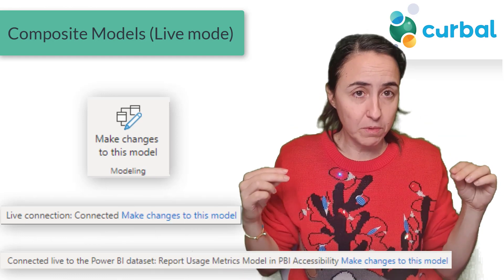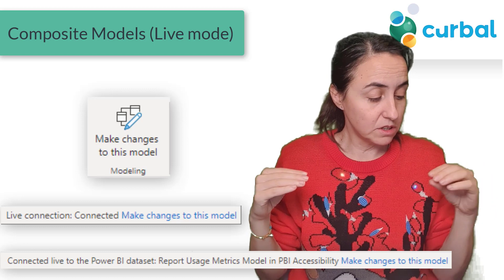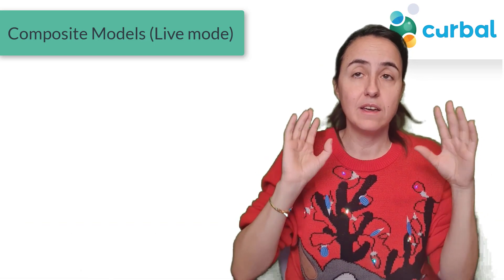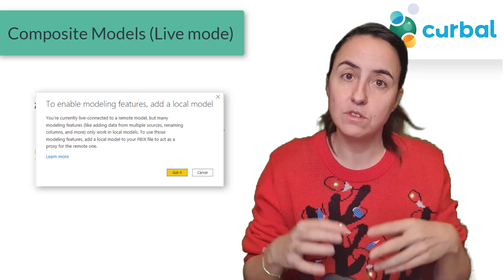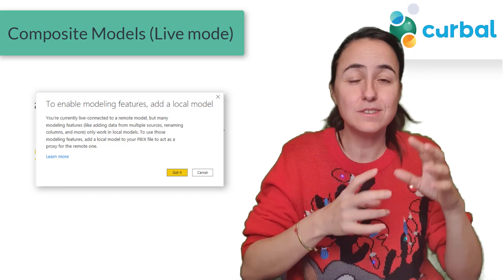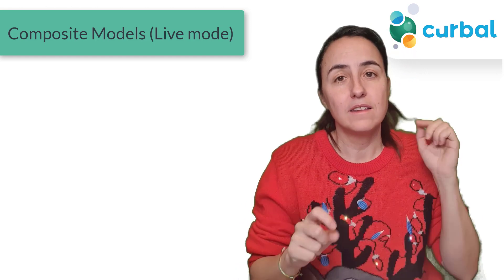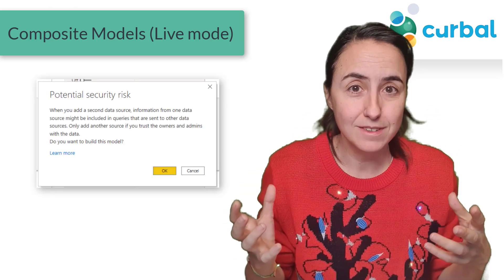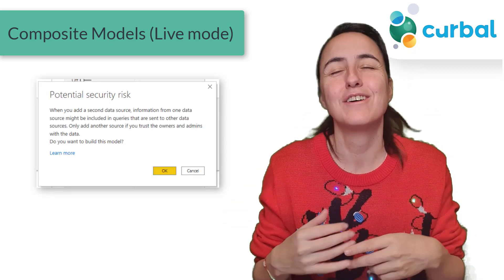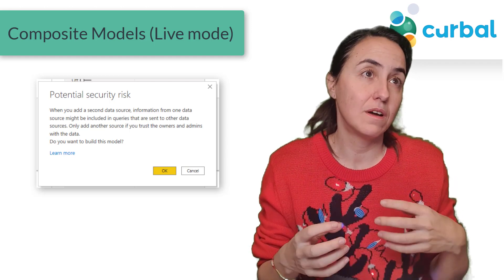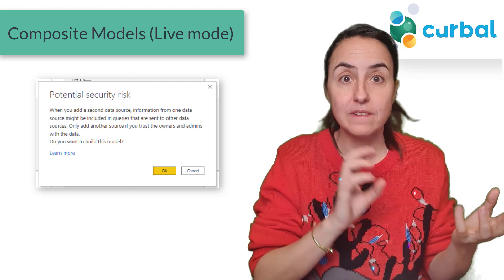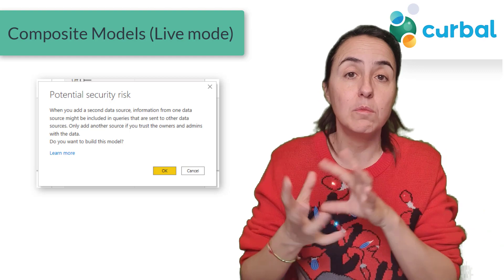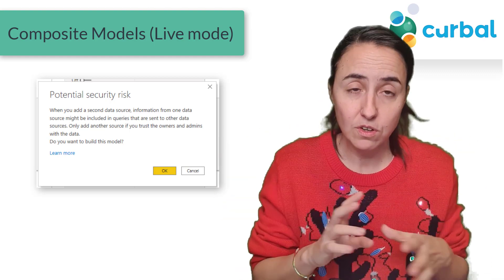When you connect to it, you're going to see at the bottom of the bar of Power BI Desktop something that says 'make changes.' If you click there, you'll get a pop-up saying a local model will be created so you can combine with all the sources and make changes in the model. Then you'll get another pop-up about privacy and security, warning that some information might be sent between sources when doing queries. So you need to be aware that data will be moved between sources — if that's okay, continue, otherwise don't.